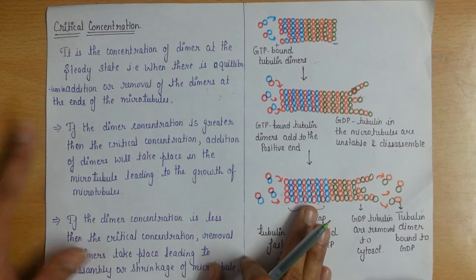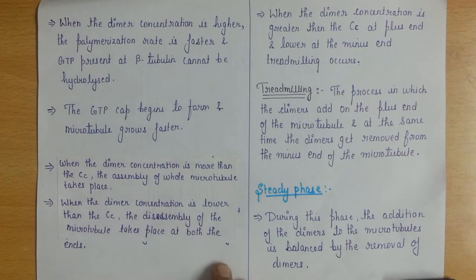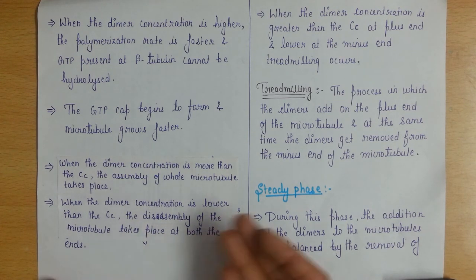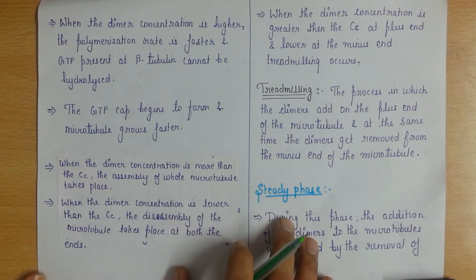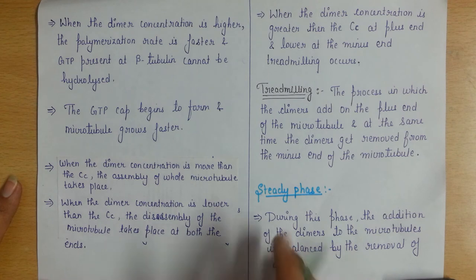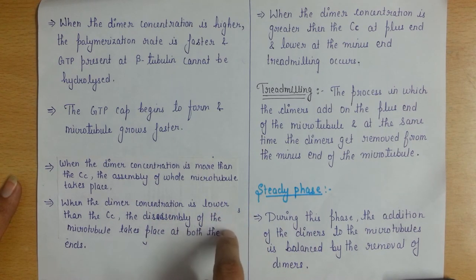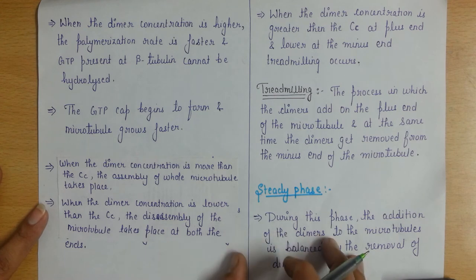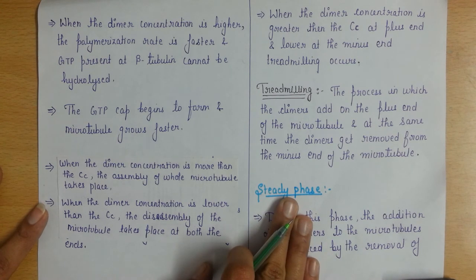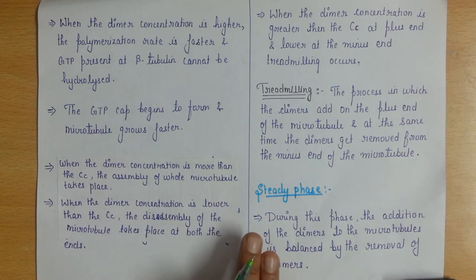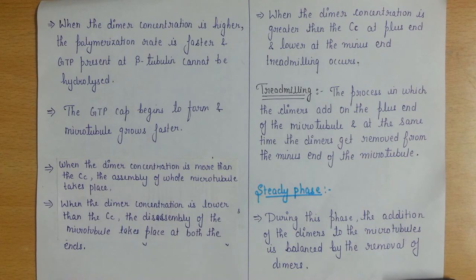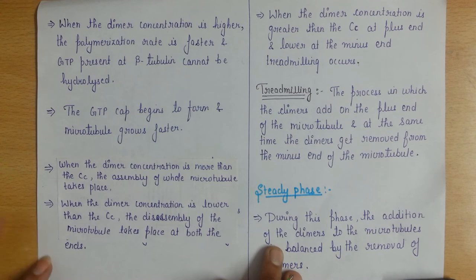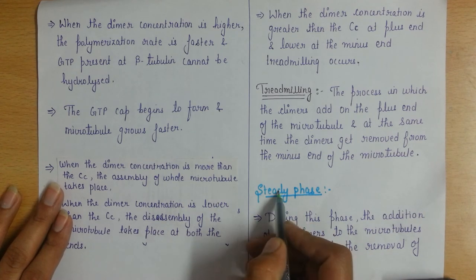After the treadmilling phase comes the steady phase. After some time, the critical concentration appears and the equilibrium phase takes place. The assembly of the heterodimers will be in equilibrium with the disassembly of the heterodimers. At that time, the dimer concentration is near the critical concentration, and assembly and disassembly are in an equilibrium phase — that is your steady phase.